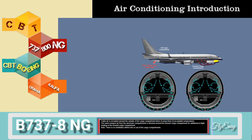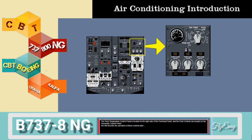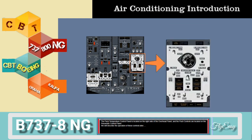The cargo compartment liners are kept at acceptable temperatures. The warm exhaust air from the electronic compartments is directed around the forward cargo compartment for additional in-flight heating. There is no ventilation airflow into or out of the cargo compartments. The pack temperature control panel is located on the right side of the overhead panel, and the pack controls are located on the pneumatic control panel.